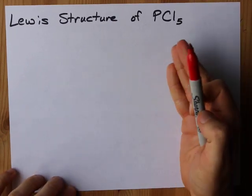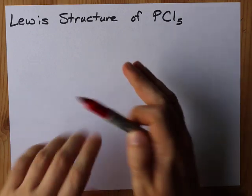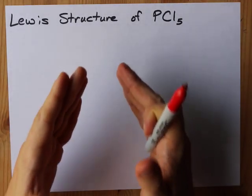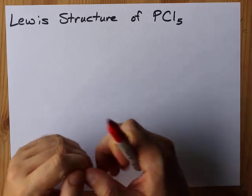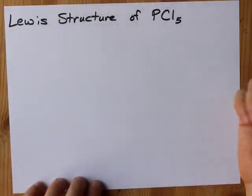You're going to need to know that phosphorus does not always follow the octet rule. Phosphorus can accommodate more than eight electrons in its outer shell. The real reason for that is because it is in the third row here. You don't have to know that.